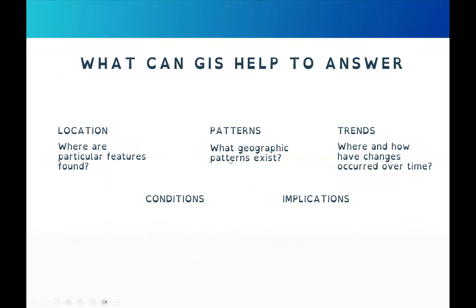What can GIS help to answer? One is location — for example, where are particular features found? There may be an outbreak of a virus or risk factors in a specific location. We can also answer questions about patterns: what geographic patterns exist, comparing geographical areas A and B, which area has more risk factors or where the outbreak is more serious. We can also answer questions about trends: where and how have changes occurred over time, leading to conditions and implications.